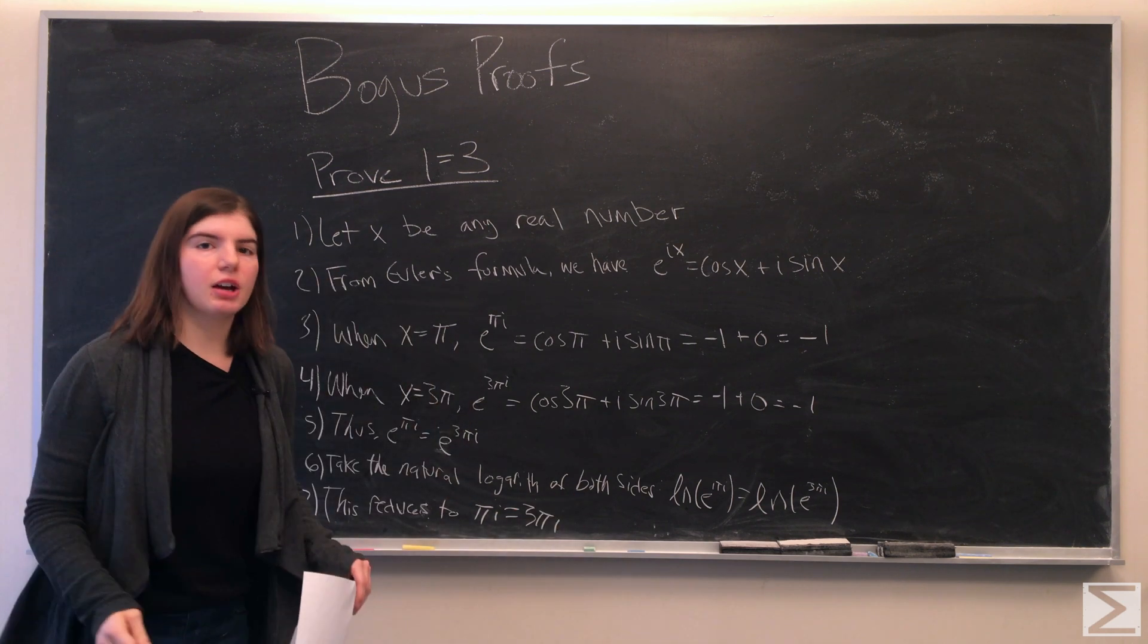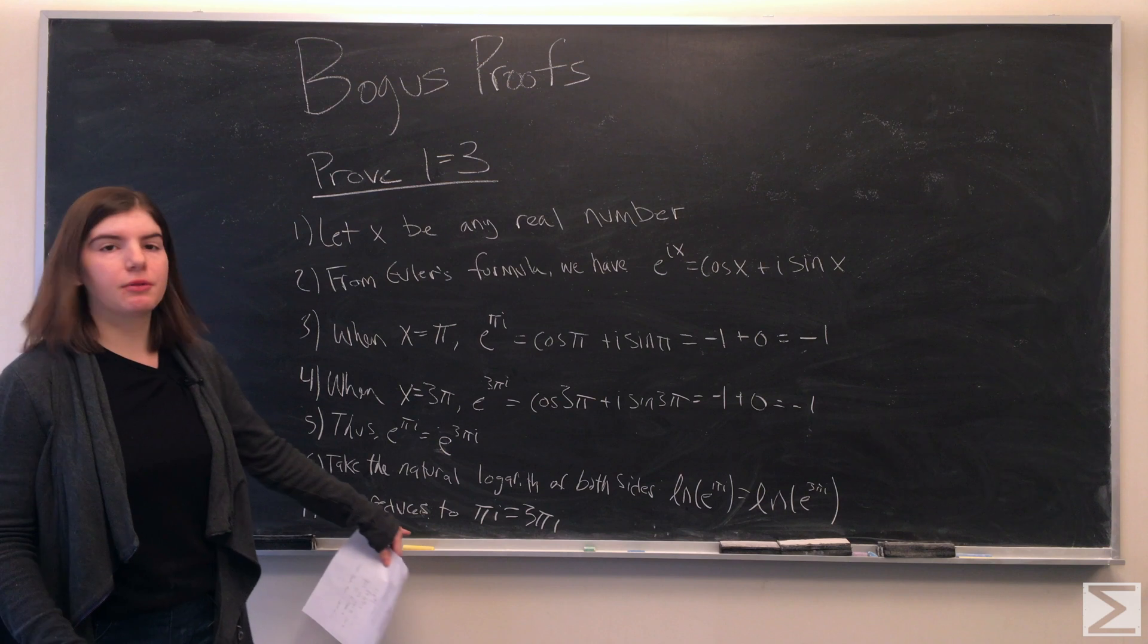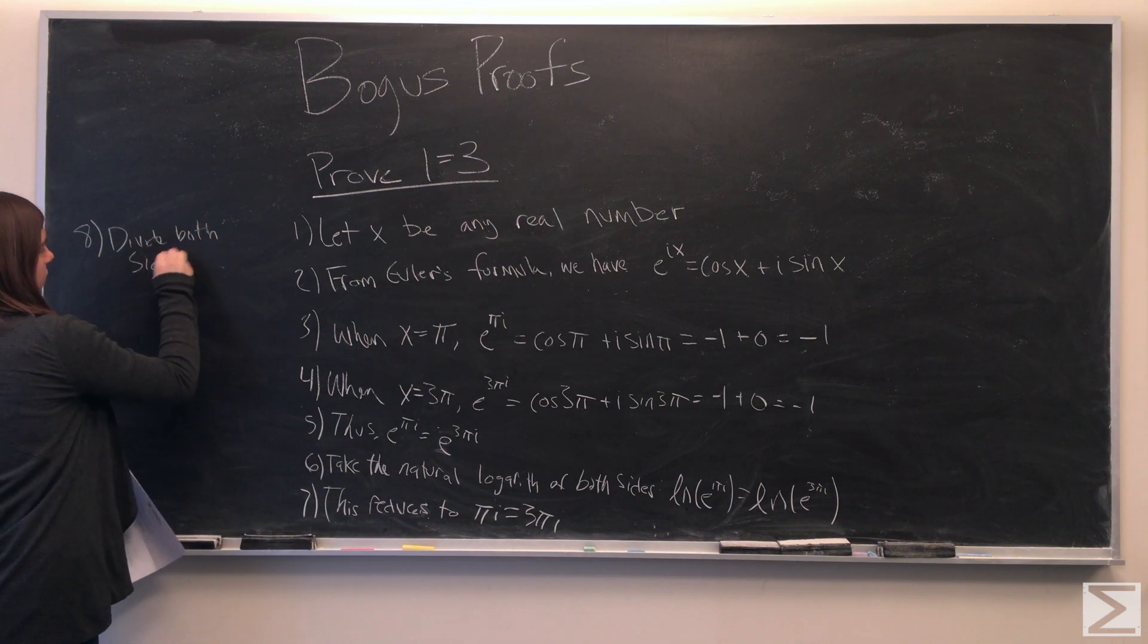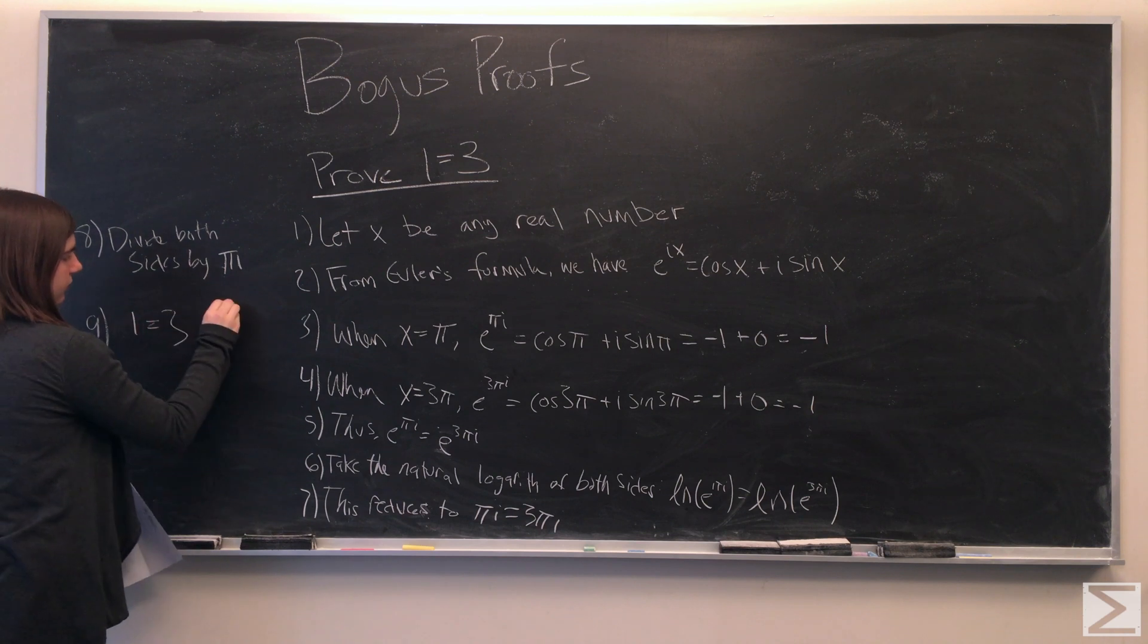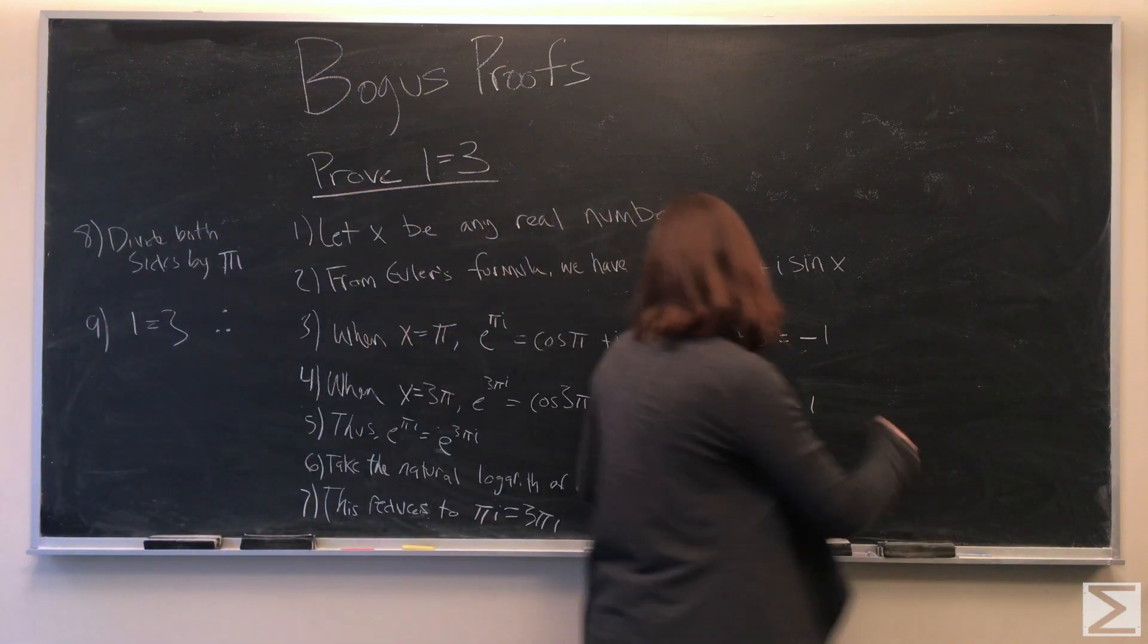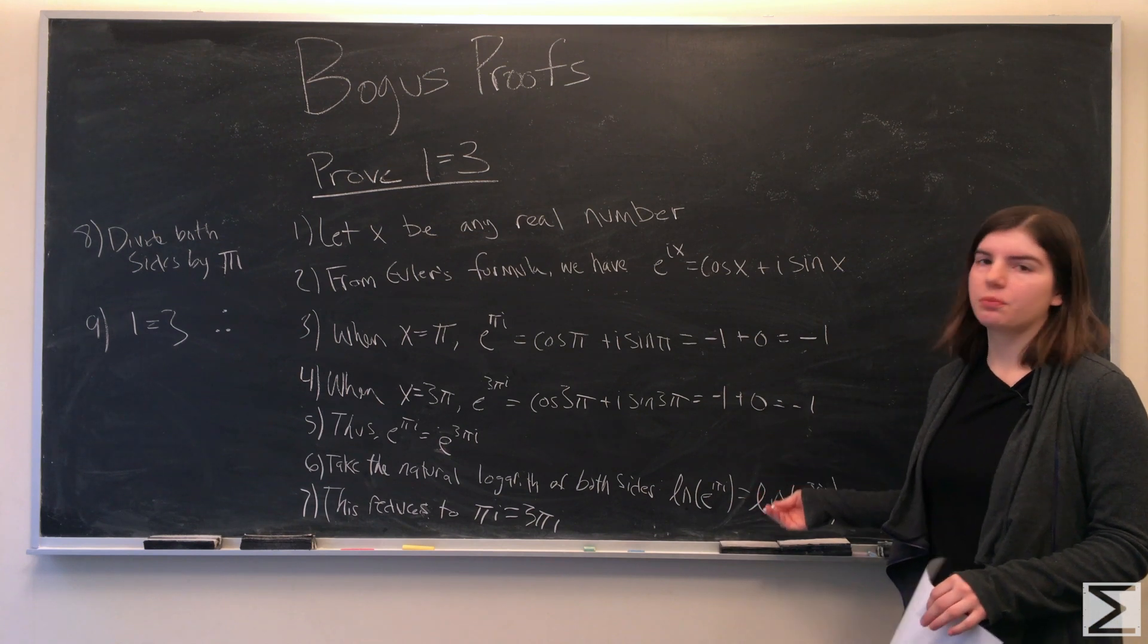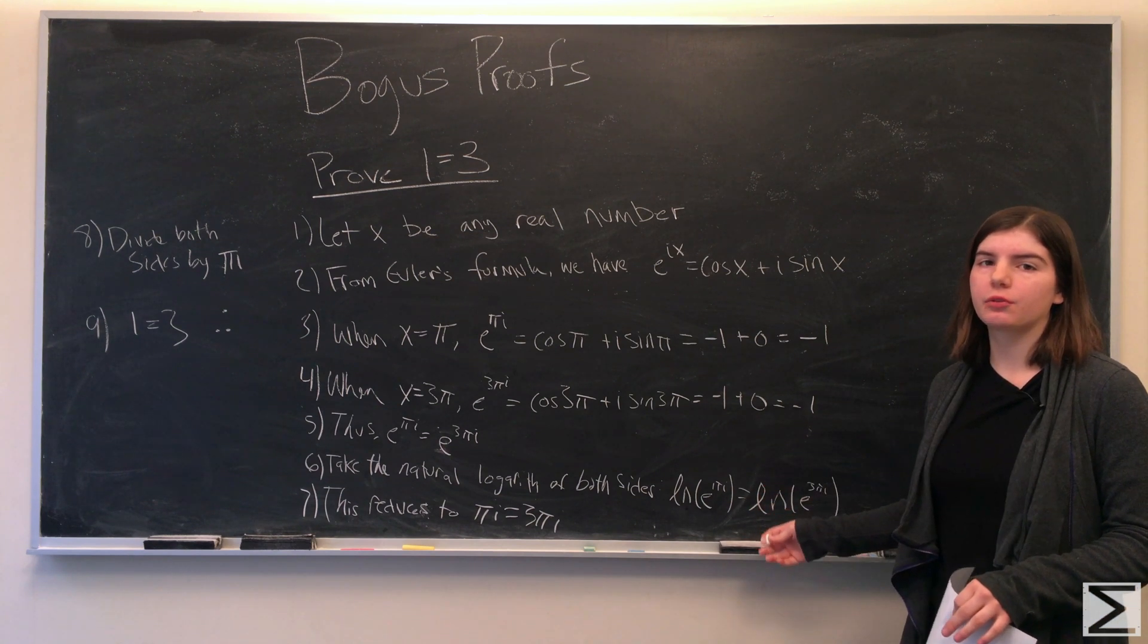Then we'll divide both sides by pi i, and we're left with 1 is equal to 3. This is our proof. If you haven't found the mistake yet, I suggest pausing the video now so you can work through it on your own.